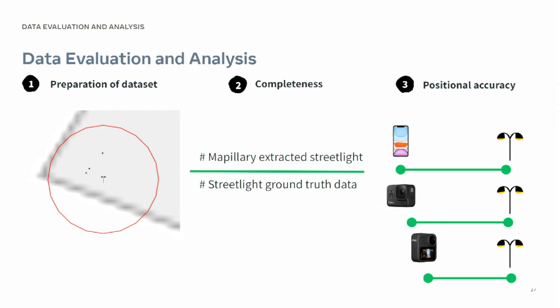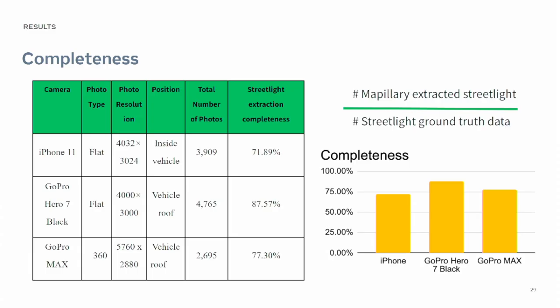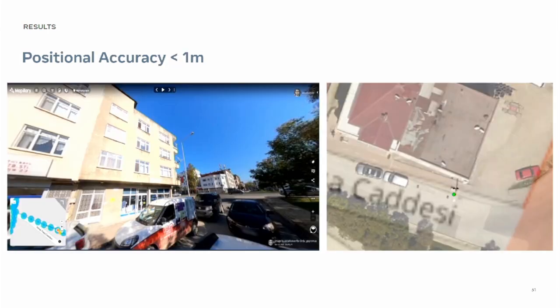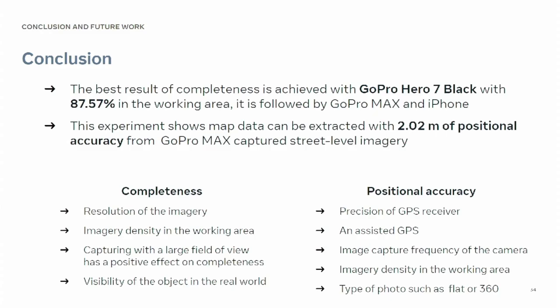I paired ground truth data with machine-generated data and calculated completeness and positional accuracy. The highest completeness came from the GoPro Hero because of the density of imagery, and in terms of horizontal positional accuracy, GoPro Max achieved the higher positional accuracy. Collecting map data is time-consuming, and Mapillary gives you a chance to collect map data at scale and automates map generation efforts.